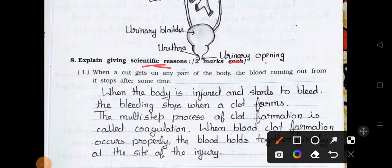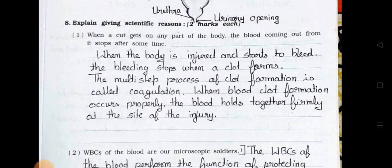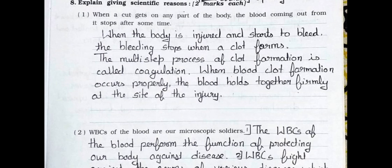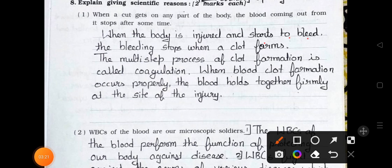Main 8: Explain giving scientific reasons, 2 marks each. Number 1: When a cut gets on any part of the body, the blood coming out from it stops after some time. Answer: When the body is injured and starts to bleed, the bleeding stops when a clot forms. The multi-step process of clot formation is called coagulation. When blood clot formation occurs properly, the blood holds together firmly at the site of the injury.